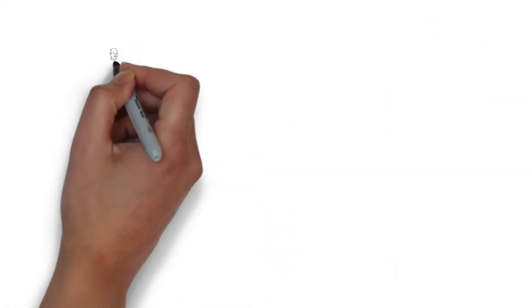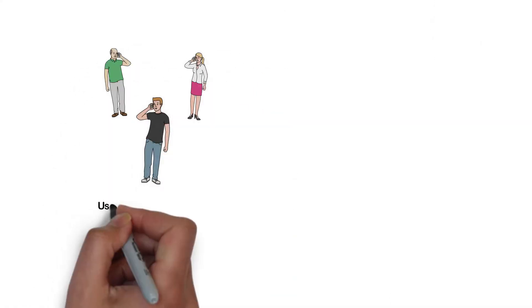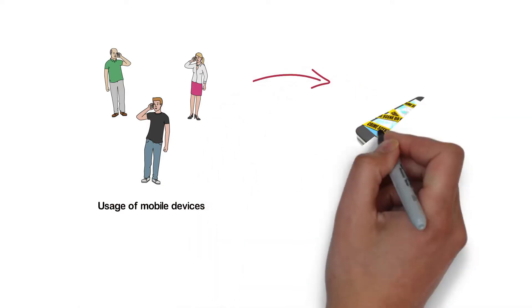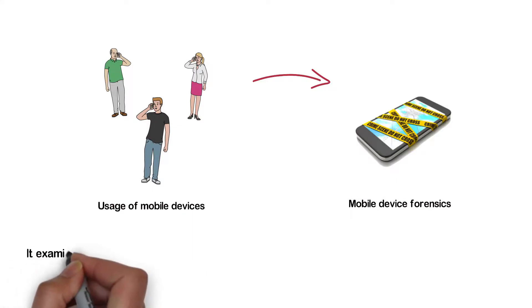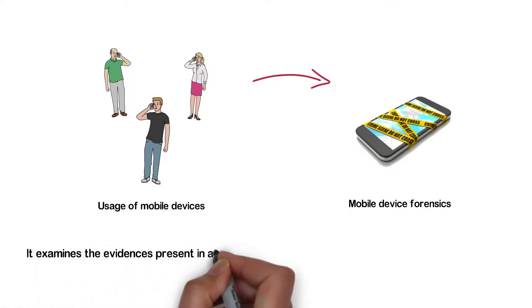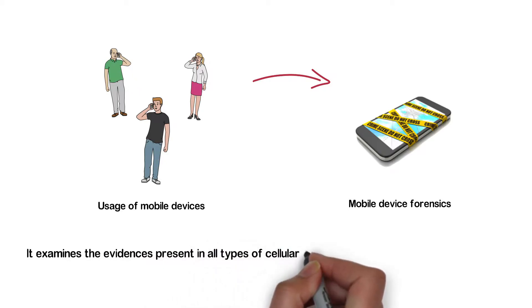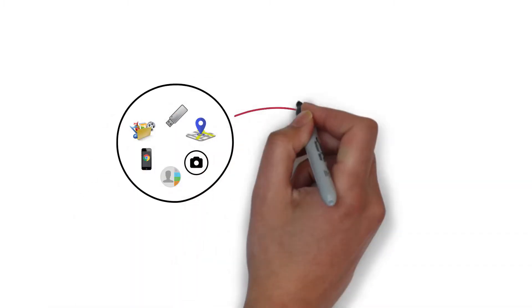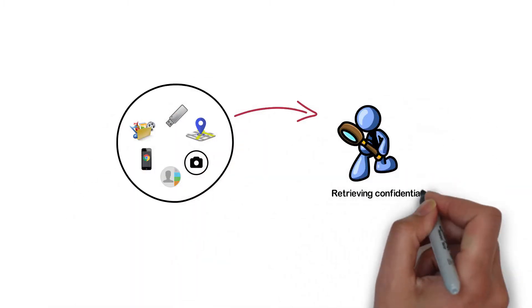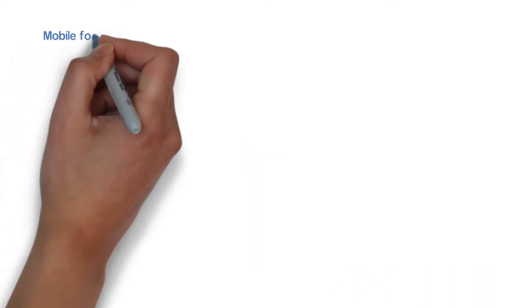As the usage of mobile devices began to grow consistently, the field of mobile device forensics has also evolved. It examines evidence present in all types of cellular phones, personal digital assistants, tablets, and smartphones. Places such as USB drives, GPS, cameras, contacts, browsing history, and other media are also searched for retrieving confidential and sensitive information.